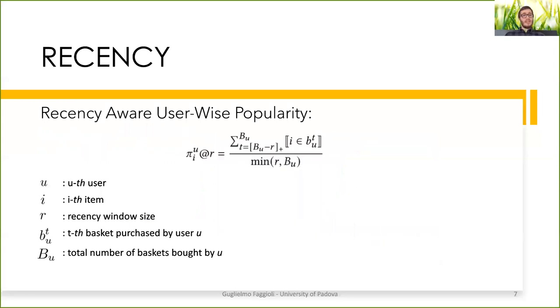Considering the recency, we can define the recency-aware user-wise popularity. The recency-aware user-wise popularity is defined as the number of baskets into a specific window or into a specific number of baskets starting from the basket we are considering that contains a specific item divided by the dimension of the recency window size. This is particularly a strong measure in this specific task since it encodes both the aspects related to the recency but also the aspects related to the user-wise popularity since it keeps track of the number of times a specific item has been bought.